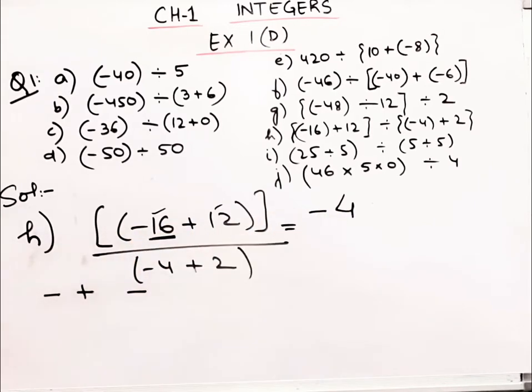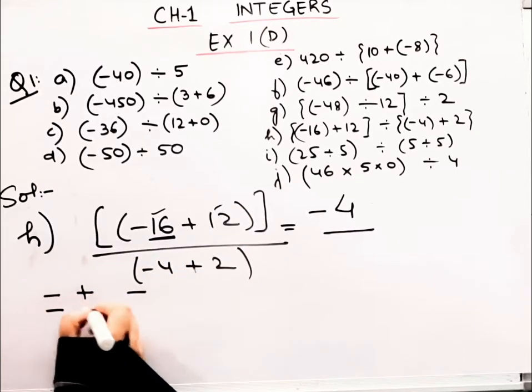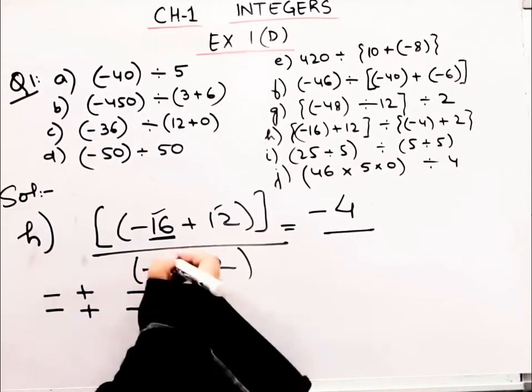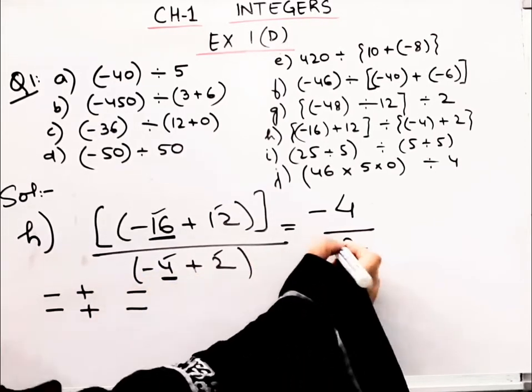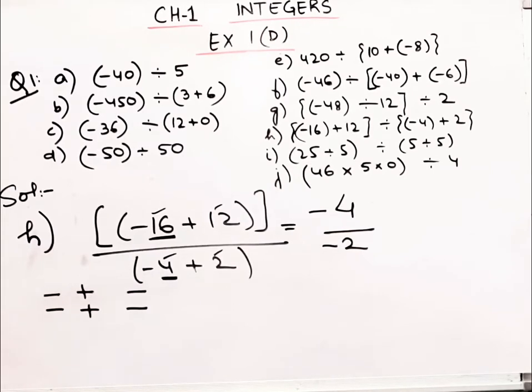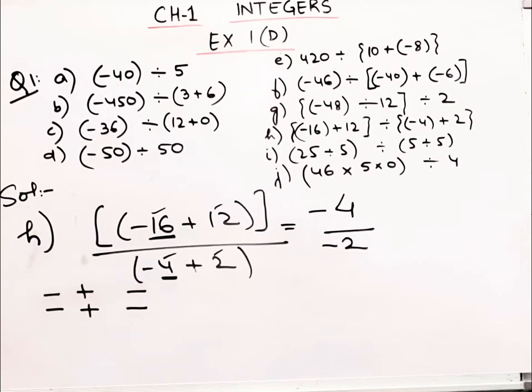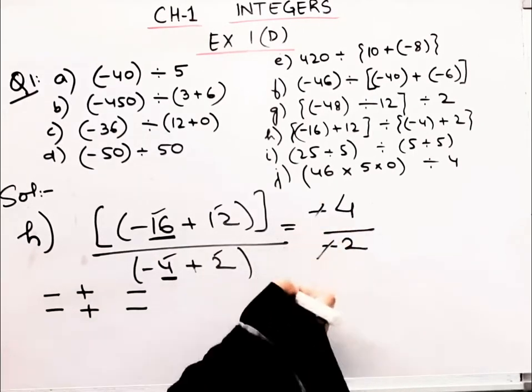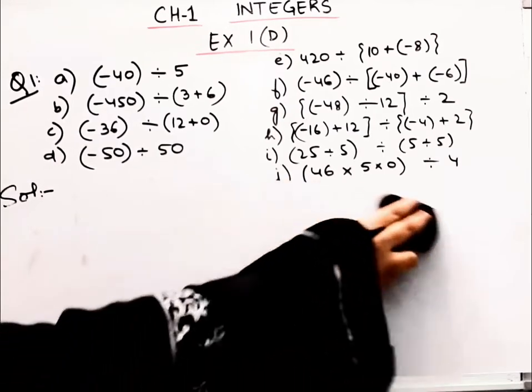Plus minus minus, what happens? Minus. Plus minus, we have minus 4. And minus 4 minus 2 becomes minus 6. Wait, let me recalculate. Minus 4 plus 2 equals minus 2. So the answer will be minus 4 divided by minus 2, which equals 2.